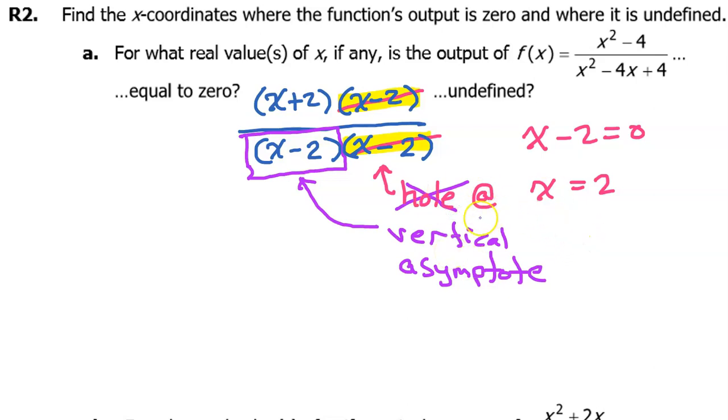But they really didn't ask us whether or not it was a hole or a vertical asymptote. This is just extra information. Either way, we have an undefined place. Either way, the function is undefined at x equals 2. So what about where the function is equal to 0?